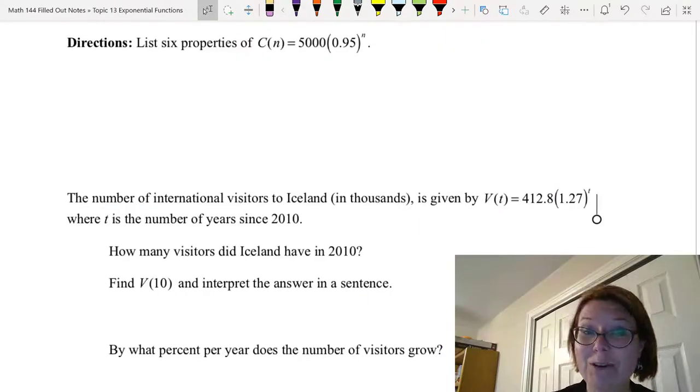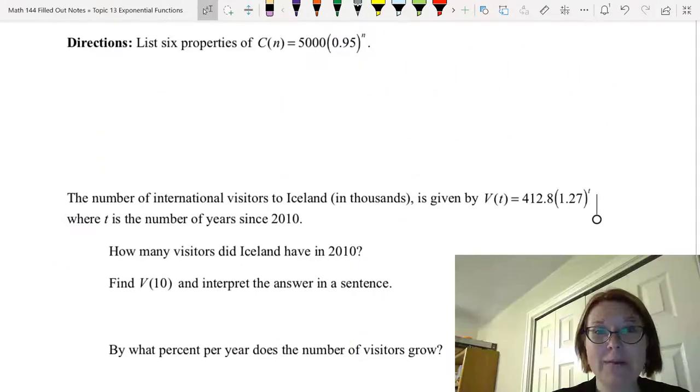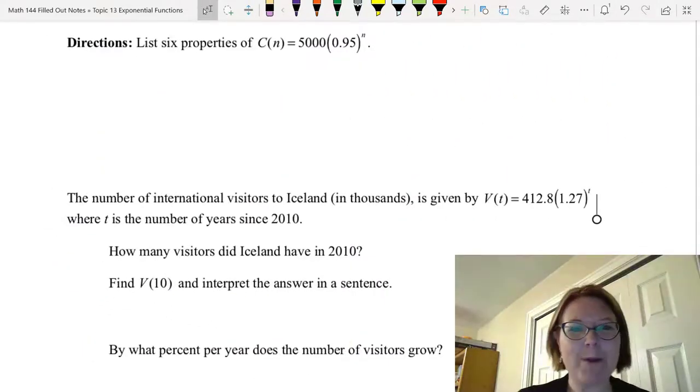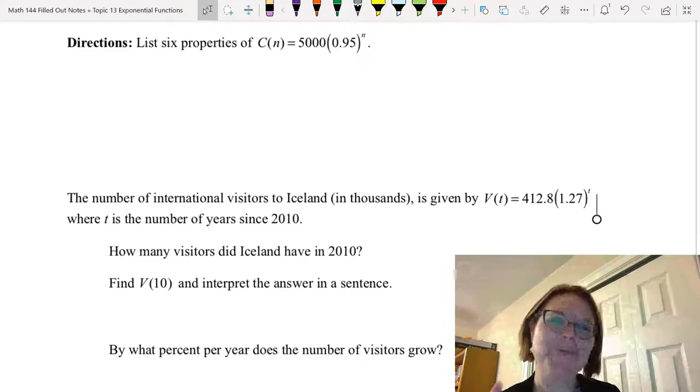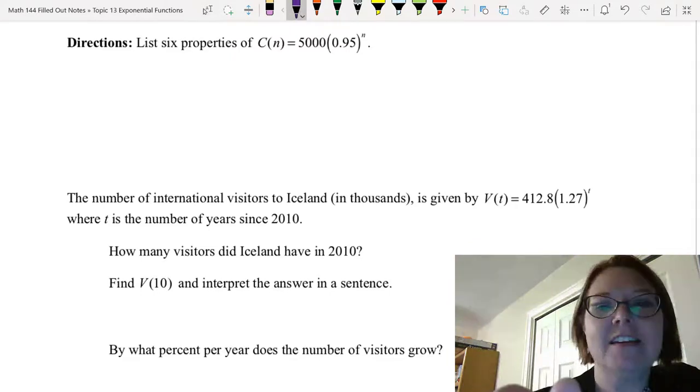All right, I have another challenge for you. I would like you to list six properties of C(n) = 5000(0.95)^n. Pause the video and see if you can give that six properties. Okay, we're back. Let's see how many properties we can actually list without graphing this. I bet we can get quite a few.